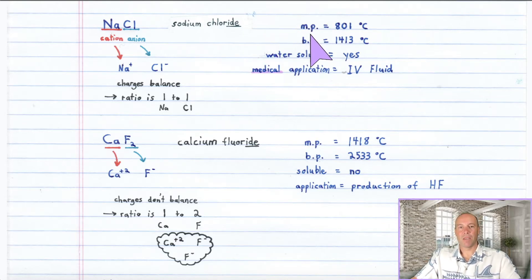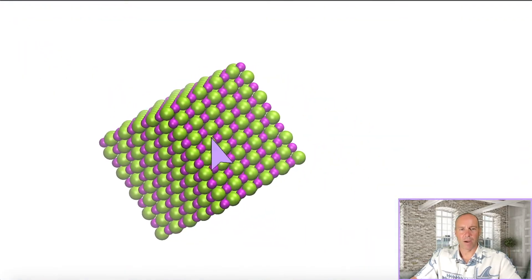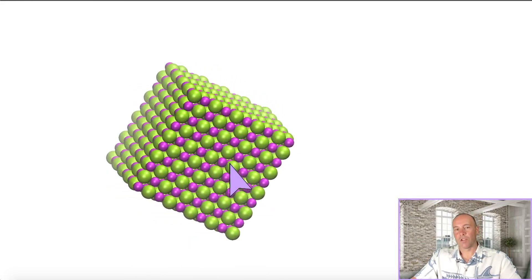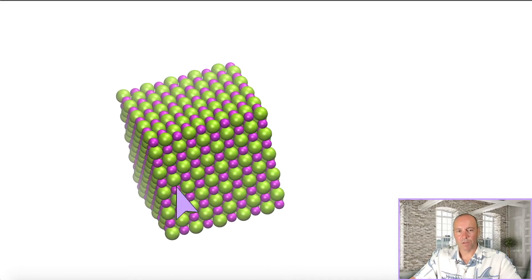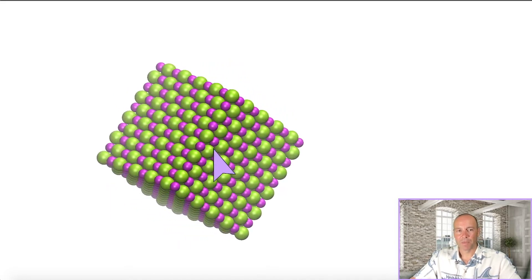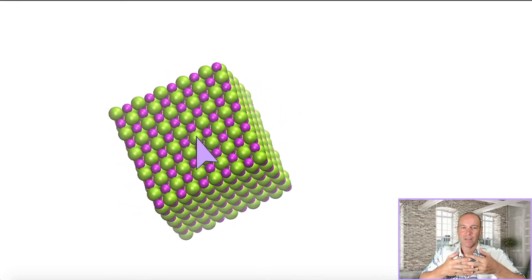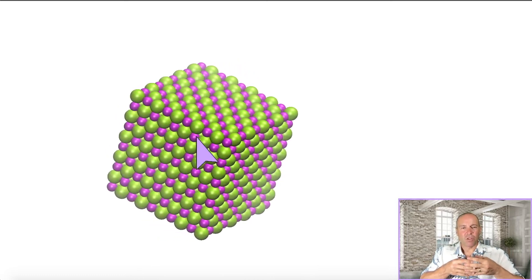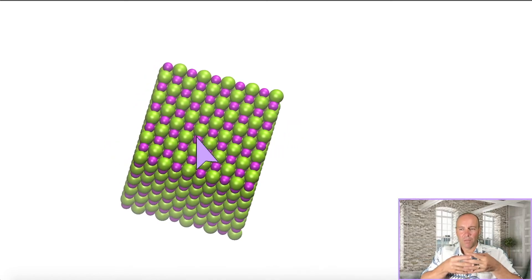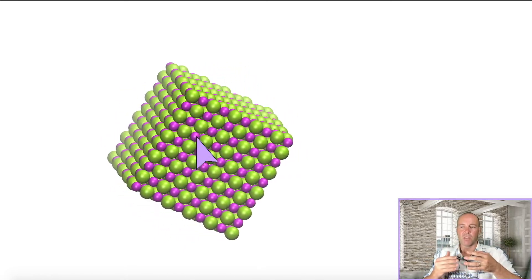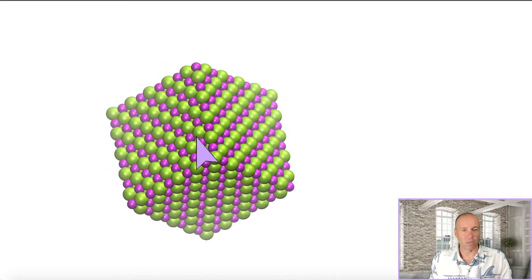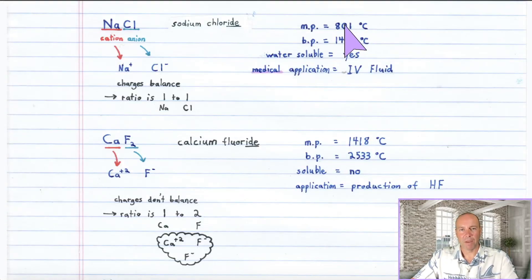Ionic compounds have pretty high melting and boiling points. If you take a look at the structure of sodium chloride, ionic compounds have a very beautiful geometrical structure. The pink ones are the sodium cations and the yellow ones are the chloride anions — opposite charges interlocked in this nice geometrical structure. Imagine melting sodium chloride: you would have to disrupt all of these ionic bonds for those ions to start to flow past one another. It's very difficult to do, so very high melting and boiling temperatures.